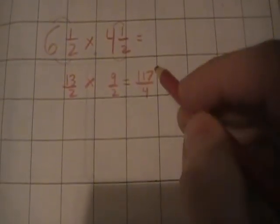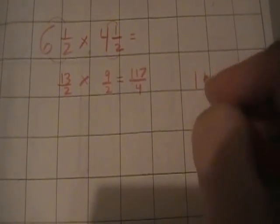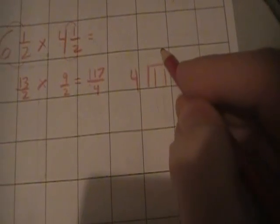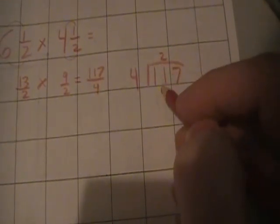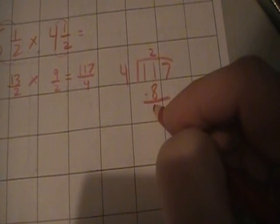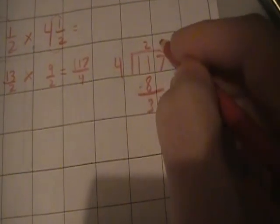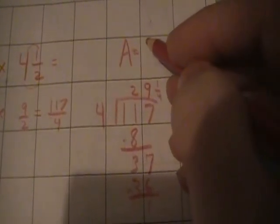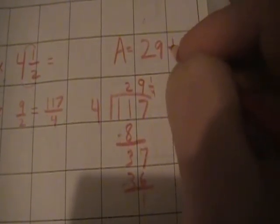Now to simplify this, we need to divide the numerator by the denominator. A hundred and seventeen divided by four. Four goes into eleven almost three times. Twice you get a remainder of three, bring down the seven. Four goes into thirty-seven nine times. Nine times four is thirty-six. We've got one-fourth left over, so twenty-nine and a quarter. The product, or the area, of this would be twenty-nine and one-fourth square units.